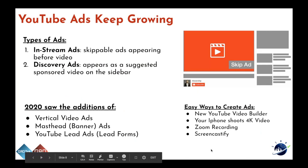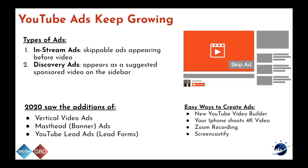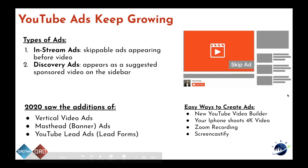YouTube ads keep growing year over year. We have generally found there are two types of ads that are helping to generate leads and sales from 2020. Those two types are in-stream ads and discovery ads. In-stream ads are skippable ads appearing before a video, and discovery ads are sponsored videos suggested on the top or right-hand side of the sidebar. There were also additions from vertical video ads to banner ads.